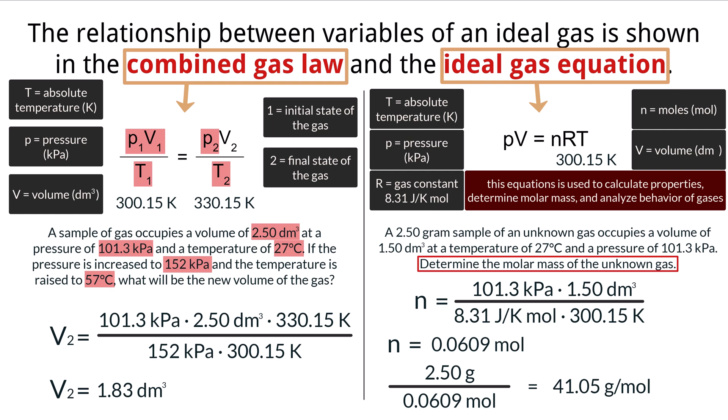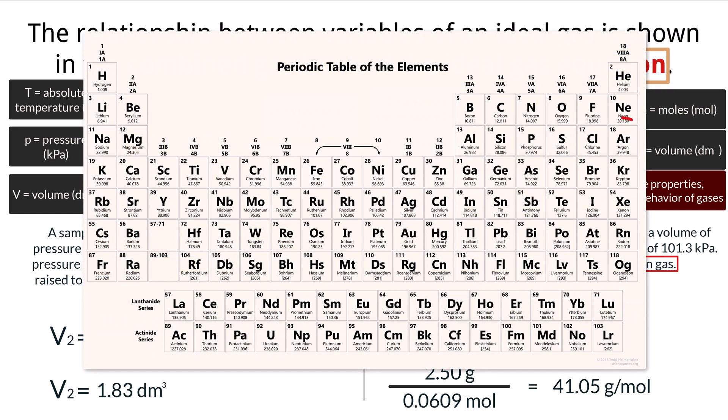If we want to take it one step further, we can try and identify what the unknown gas is based on the molar mass. Taking a look at the periodic table, argon has a molar mass of 39.948 grams per mole. With the information that we have, and 39.948 being close to 41.05, we could say that it is likely that this gas is argon.